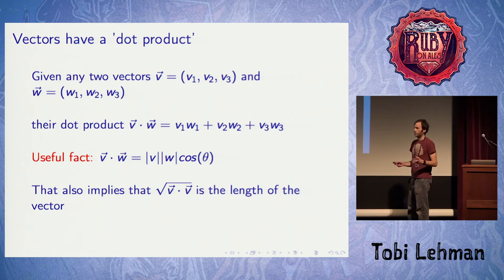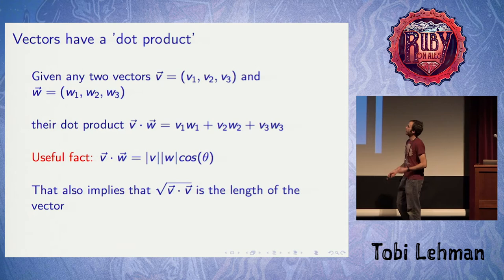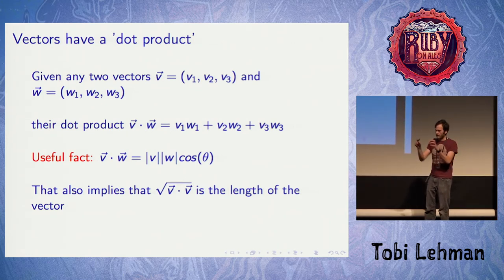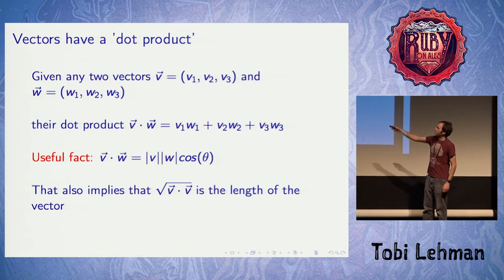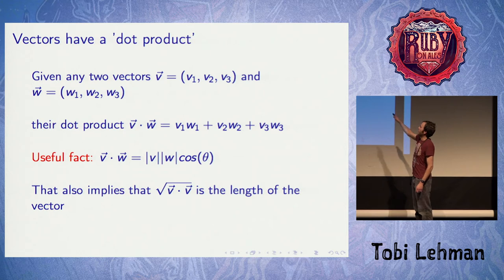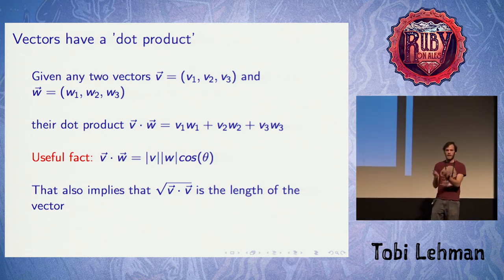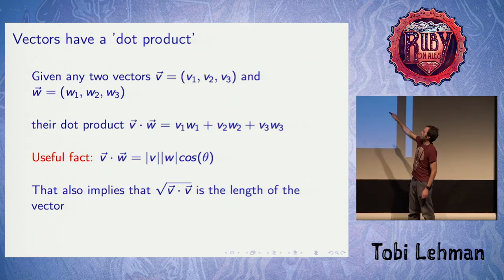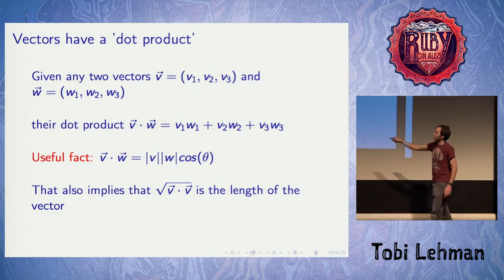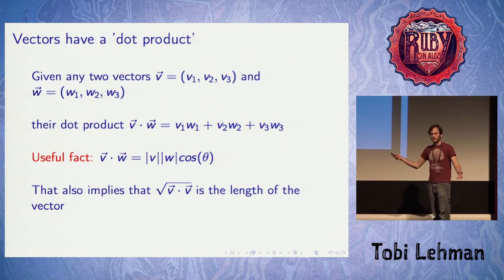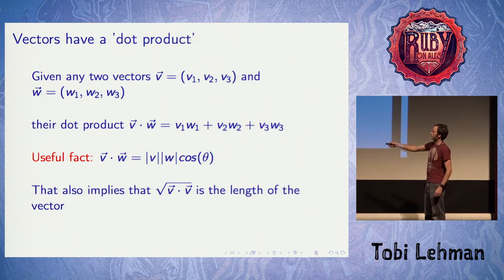A few more things about vectors, all rooted in Euclidean geometry. If we define the dot product on the array representation of vectors, it's computed by taking the X components and multiplying them together, the Y components and multiplying them, the Z components and multiplying them, and summing it all up. This operation tells you something about the lengths of two vectors and the angle between them. If you dot a vector with itself, you get V1 squared plus V2 squared plus V3 squared — which is like A squared plus B squared in the Pythagorean theorem. So to find the length of a vector, just dot it with itself and take the square root.